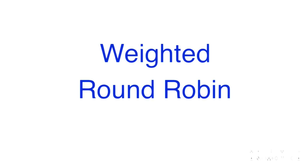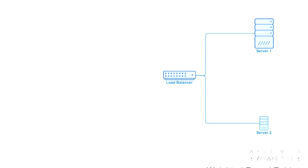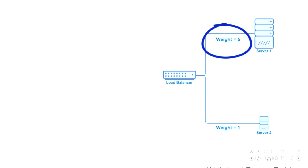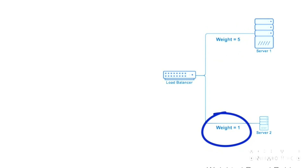In weighted round robin, we have two servers — one with higher capacity and one with lower capacity. We assign weights: weight five to server one and weight one to server two. So as requests come in, the first five go to server one due to its higher capacity, and the sixth goes to server two. Then the cycle repeats: the next five go to server one, then one to server two.